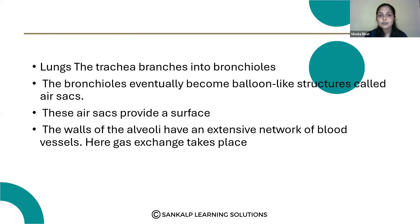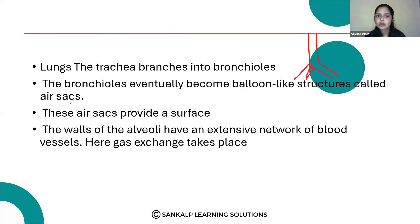Lungs — the trachea branches into bronchioles. Mainly in lungs, this is the trachea that becomes bronchioles. The bronchioles eventually become balloon-like structures called air sacs. So these main two branches — bronchi, then bronchioles like this — primary bronchioles, secondary bronchioles like this.